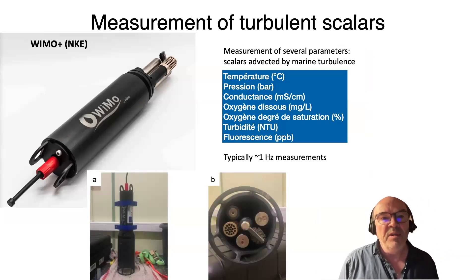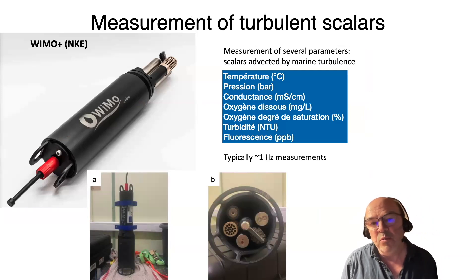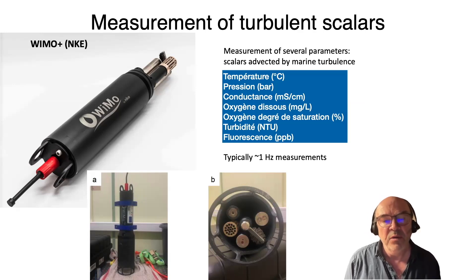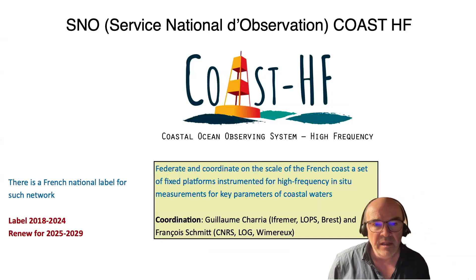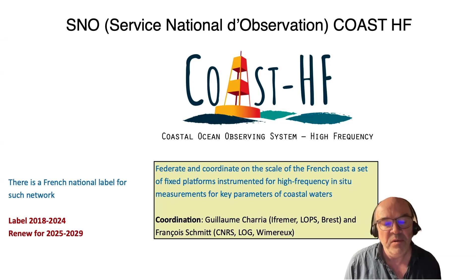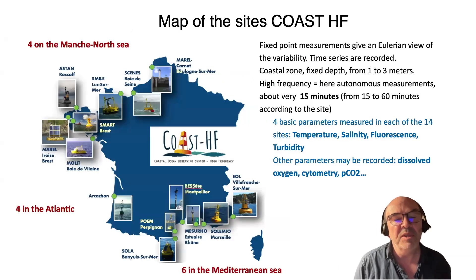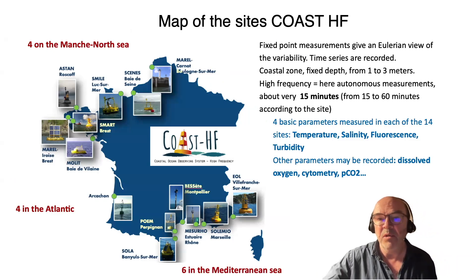You can also make measurements of different turbulent scalars using what are called multi-parameter sensors. Different parameters are measured simultaneously — typically at 1 Hz — including temperature, pressure, conductance (which gives information about salinity), dissolved oxygen, and turbidity. In France we have the SNO, meaning National Observation System: COSTACHEF, which stands for Coastal Ocean Observing System at High Frequency. It consists of fixed platforms measuring different properties of coastal waters at high frequency at various locations along the French coast, recording temperature, salinity, fluorescence, and turbidity roughly every 15 minutes.